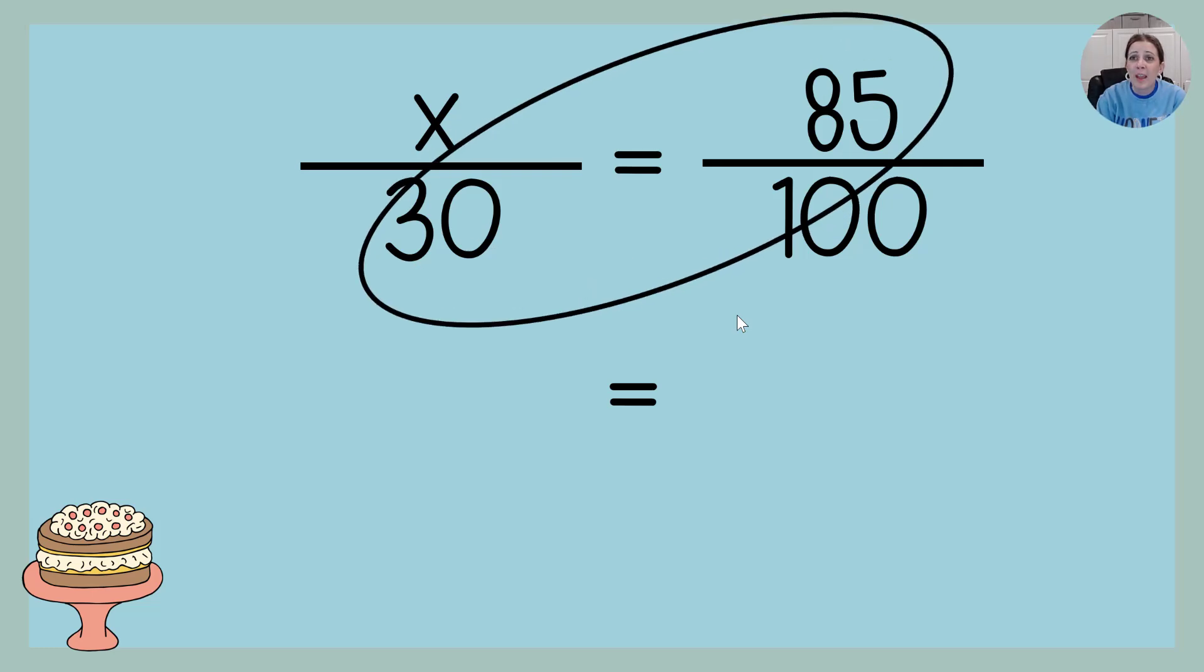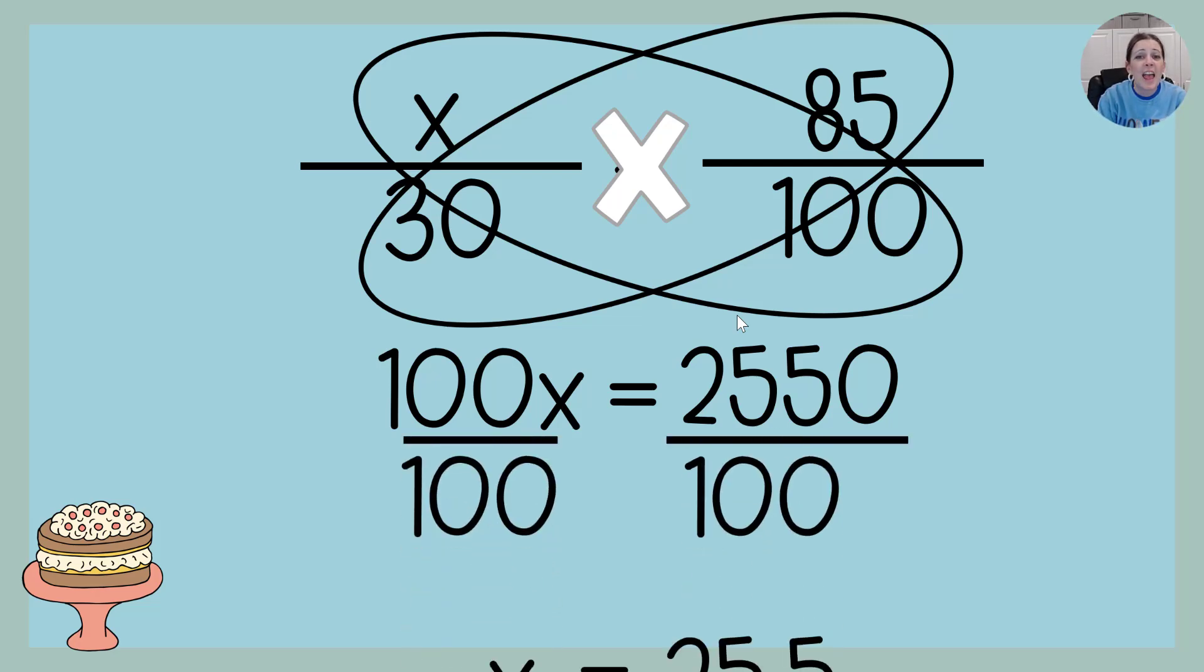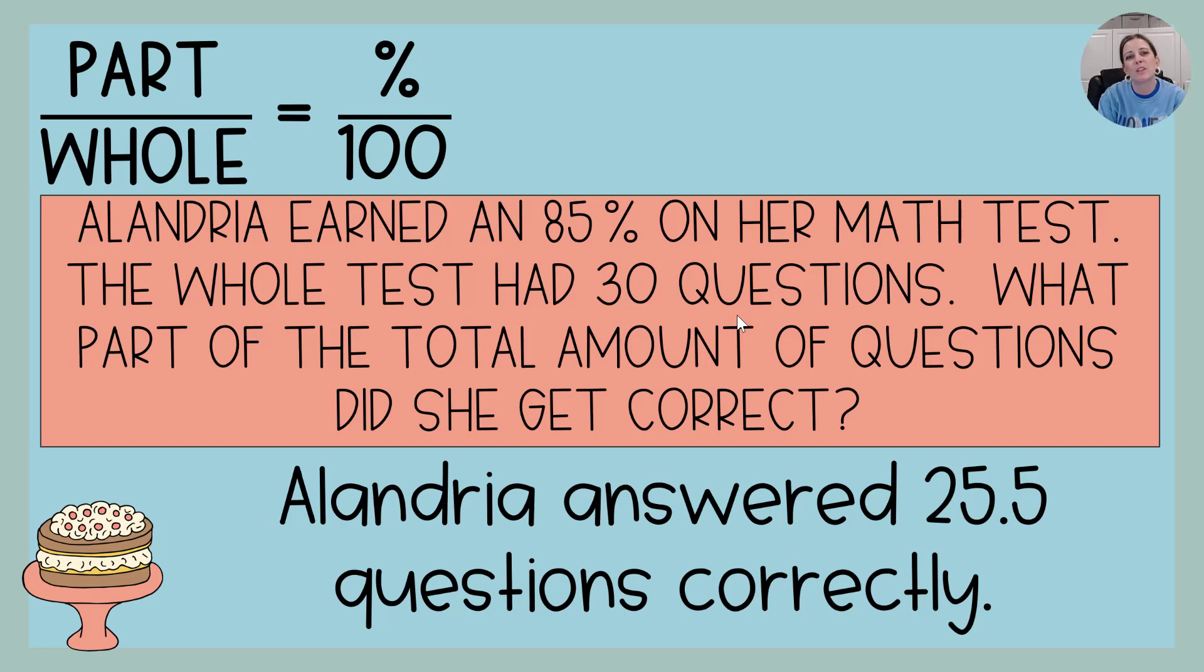Actually we're going to do 85 times 30, and then we're going to do 100 times X. And so those came in a little backwards, but you've done a few, so I bet you get the idea. We're going to divide both sides by 100. X is 25 and a half, so Alandria answered 25 and a half questions correctly.